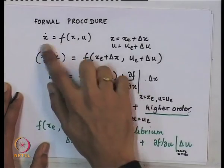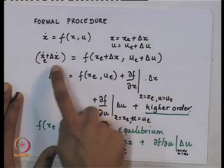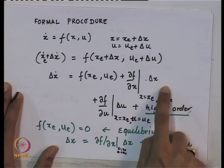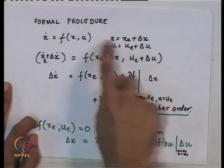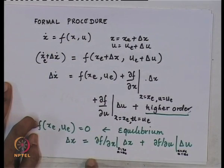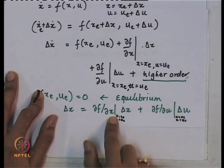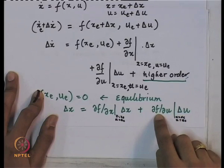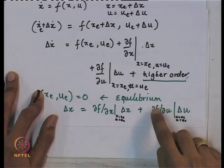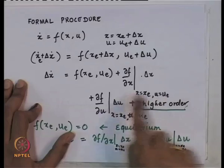The formal linearization procedure: if you have x_dot = f(x, u) as a non-linear system, assume small deviations from the equilibrium. Substitute into the equations and apply a Taylor series approximation. The equilibrium term f(x_c, u_e) = 0 because at equilibrium x_dot must be zero. What you get eventually is delta_x_dot equals the partial derivative of f with respect to x evaluated at equilibrium times delta_x, plus the partial derivative of f with respect to u evaluated at equilibrium times delta_u.